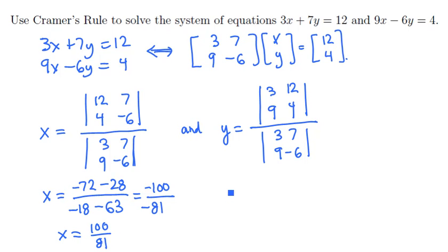On the other hand, y equals the top determinant. We have 12 minus 9 times 12, which is 108 on the top. And in the bottom, we still have minus 18 minus 63, or minus 81. If we take 12 minus 108, we obtain negative 96. And so we can clean that up to y equals 96/81.